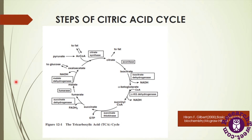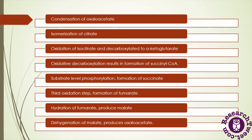In the last oxidation step of the cycle, malate is converted into oxaloacetate, which is a four-carbon molecule. This process is catalyzed by malate dehydrogenase, and one molecule of NADH is released. The oxaloacetate then takes part again in the citric acid cycle as another molecule of acetyl coenzyme A enters as substrate. In the third and fourth steps of this cycle, two molecules of carbon dioxide are released.